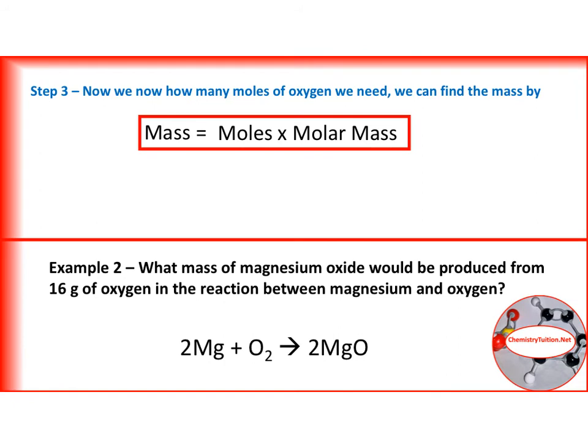So now it's the last step. We know that mass is equal to moles times molar mass. So we know we have two moles of oxygen. So all we need to do is times our two moles by the molar mass of oxygen, which is 32, to give us 64 grams of oxygen.